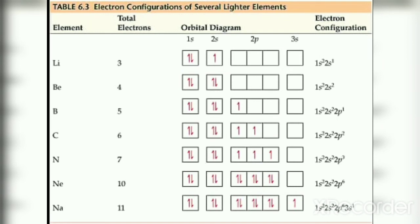For lithium, atomic number 3, the electronic configuration can be shown using an orbital diagram or SPDF notation. Each box in the orbital diagram represents an orbital accommodating a maximum of two electrons shown by upward and downward arrows. Two electrons go into 1s and the third into 2s, giving 1s²2s¹. Beryllium (4 electrons) is 1s²2s², and boron (5 electrons) is 1s²2s²2p¹.